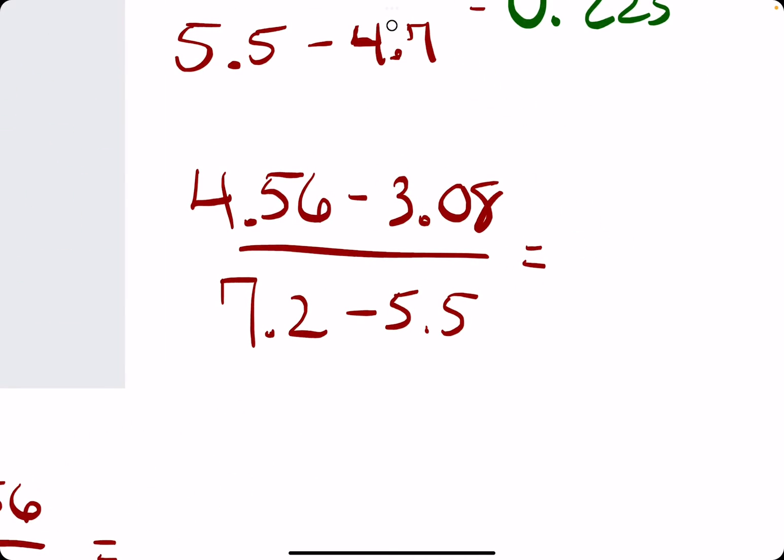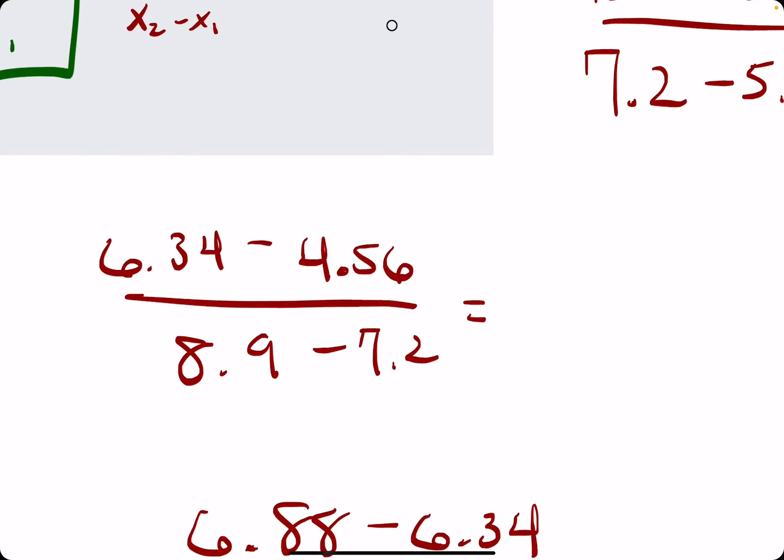For the second one we have 4.56 minus 3.08, that gives us 1.48, and we're dividing that by, let's see, that's 1.7, and that gives us 0.87.